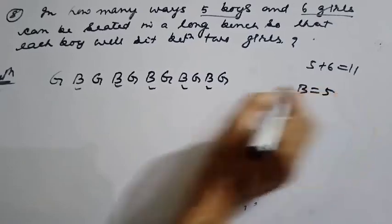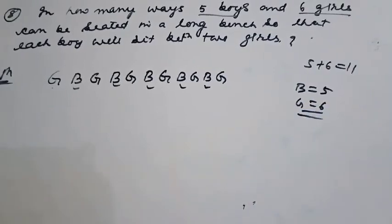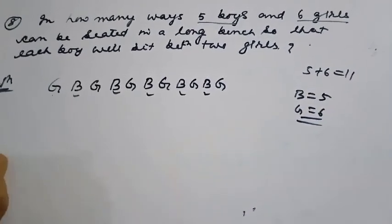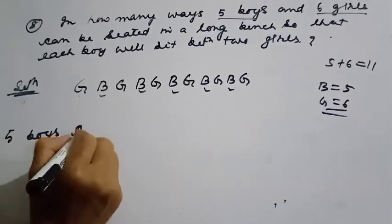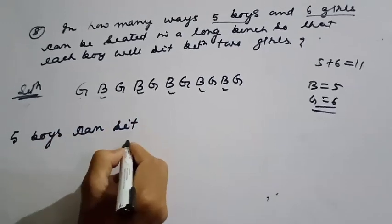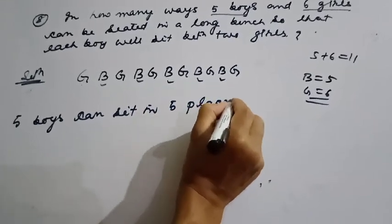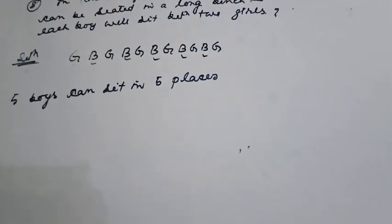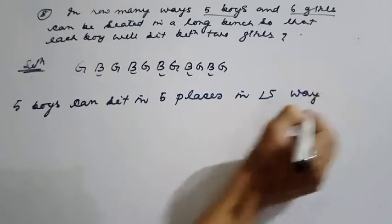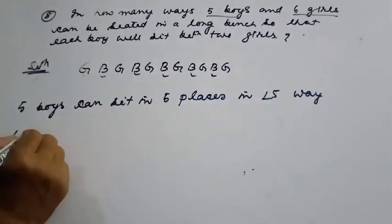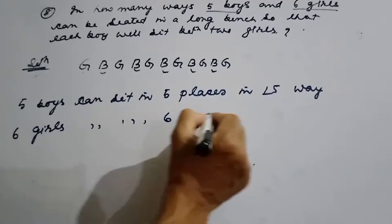Boys: 5, Girls: 6. Five boys can sit in 5 places in factorial 5 ways. Six girls can sit in 6 places in factorial 6 ways.